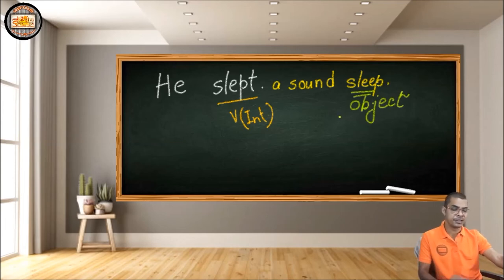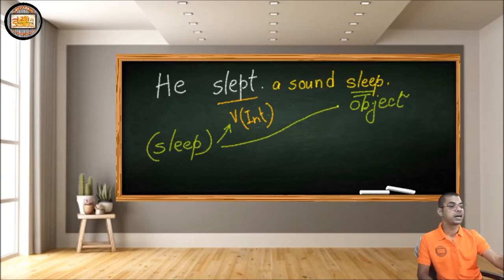Just have a look at it: 'He slept a sound sleep.' Both the terms 'slept' and 'sleep' are derivatives of sleep. So the same word is used once as a verb and then as an object. This is a lighter object. It's very easy for the intransitive verb to carry this object.